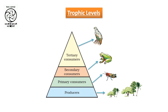Now you are conversant with our environment and the dependence of one component over another. Each of these components forms a trophic level. Plants as producers are at the first trophic level. These plants are eaten up by herbivores, which are primary consumers and form the second trophic level. These herbivores are eaten up by carnivores, forming the secondary consumers at the third trophic level.